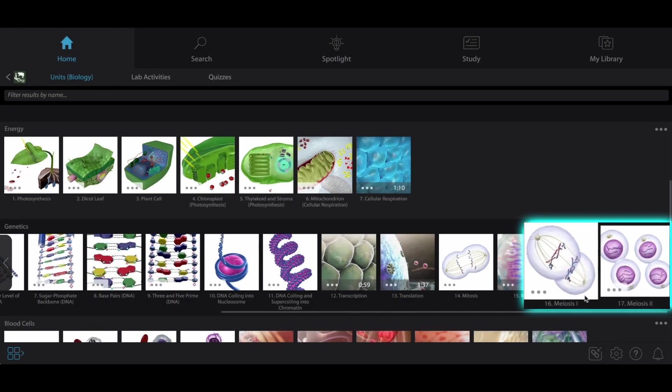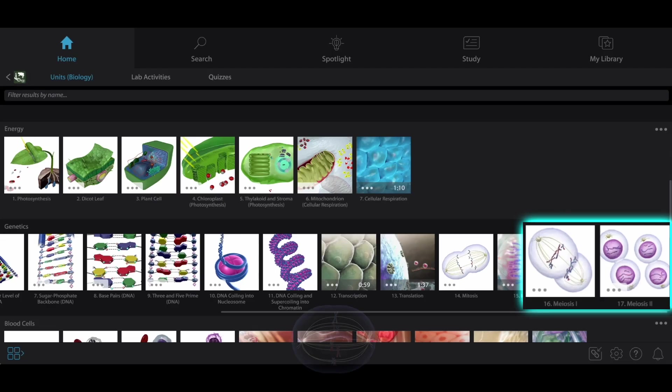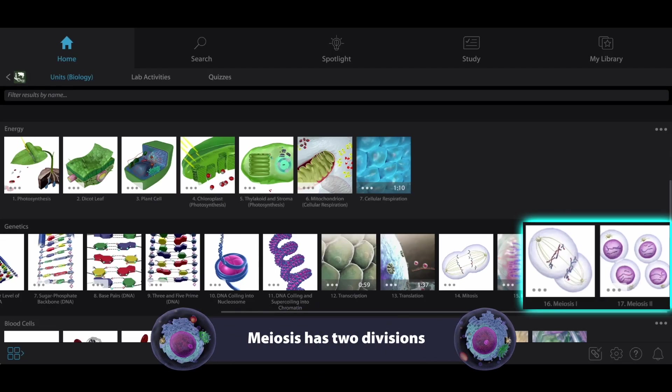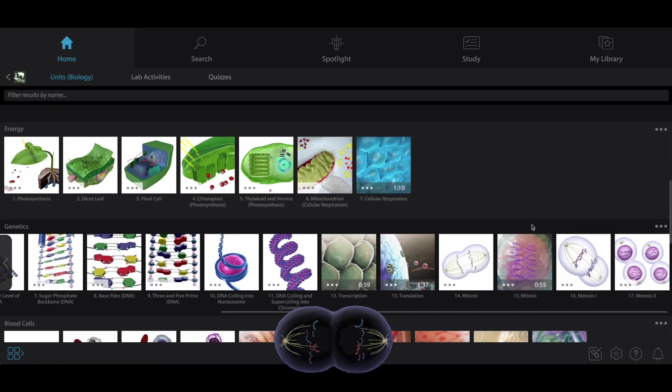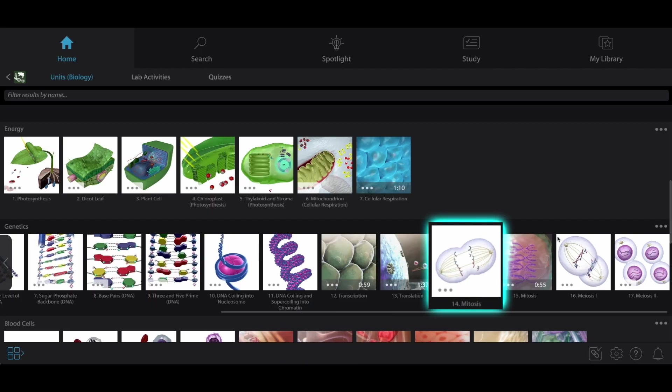The first big difference you'll notice before even opening up either of our meiosis models is that meiosis happens in two phases. That is, it actually involves two divisions, whereas mitosis only involves one.